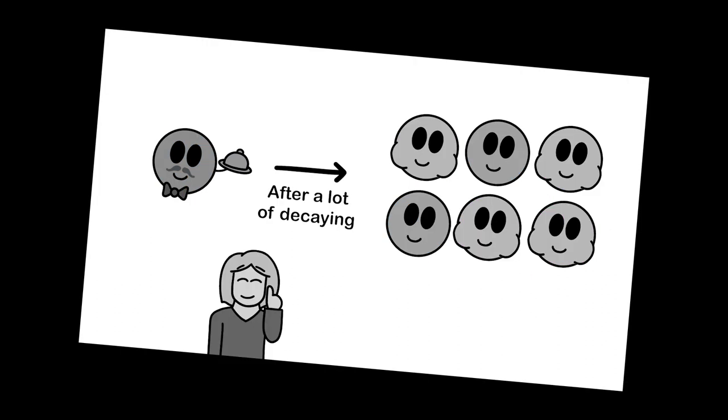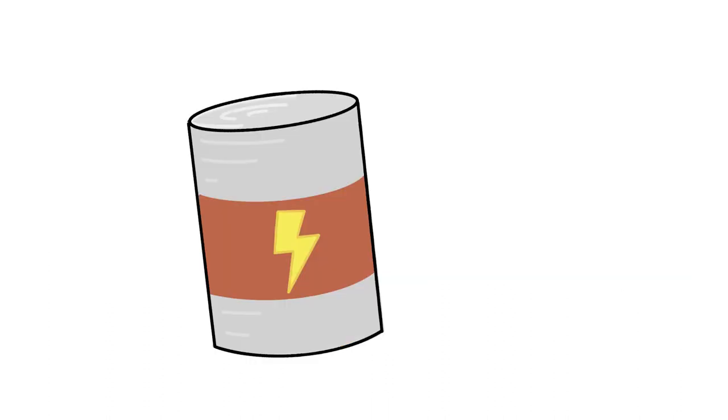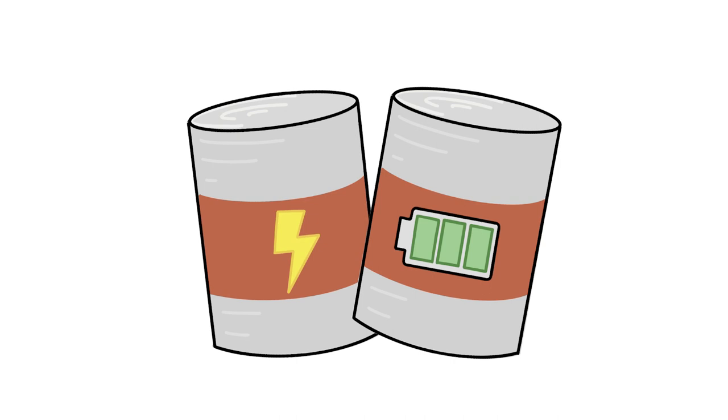As discussed in the videos on antimatter and the standard model, some quantities are conserved in particle interactions and therefore also in particle decays. Electric charge is an example of this, but also energy. As a result, the total charge and energy of the decay products is the same as the charge and energy of the original particle.